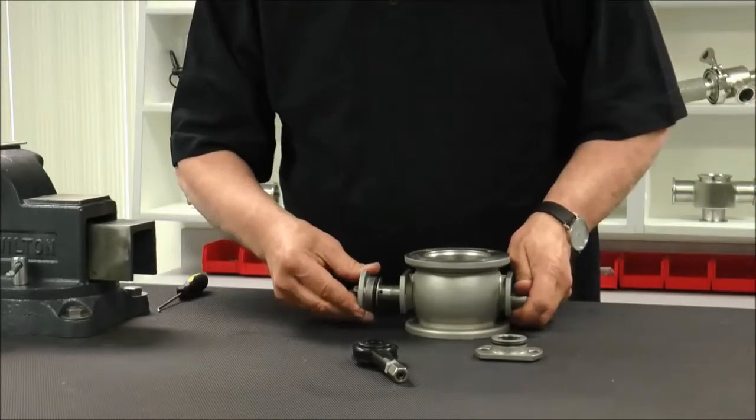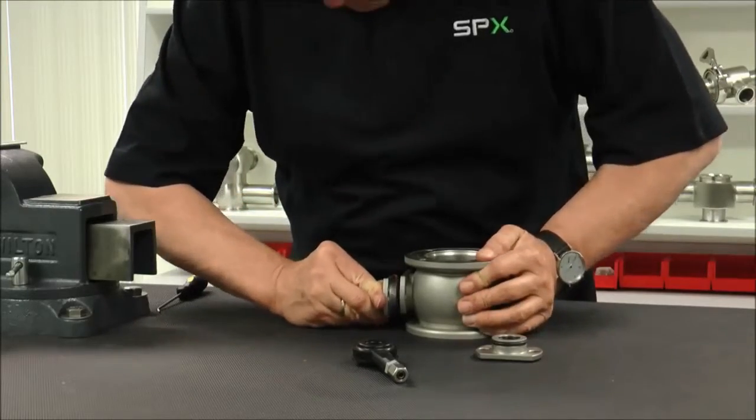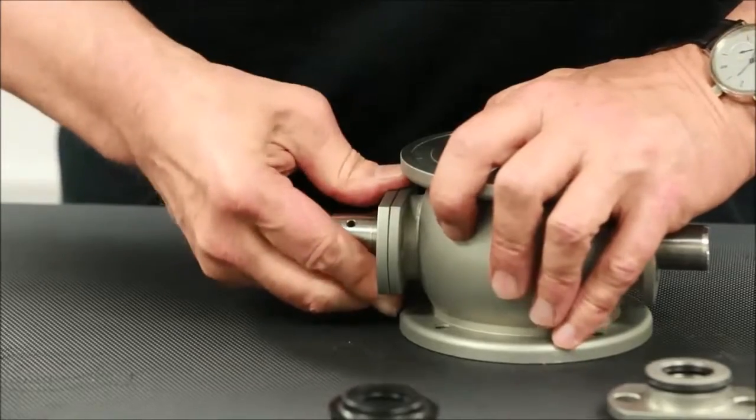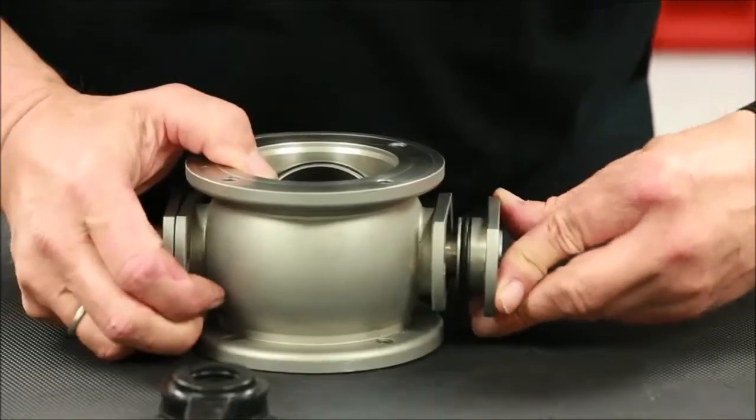With installation of the O-rings and guides complete, slide both the upper and lower bearing holders over the shaft and into position on the housing. Secure them in place with 13mm bolts and hand tighten.